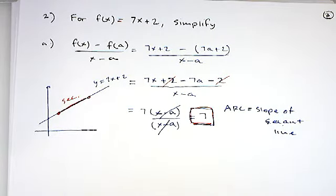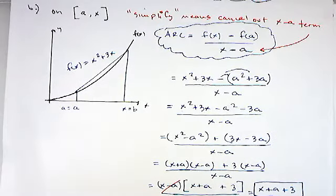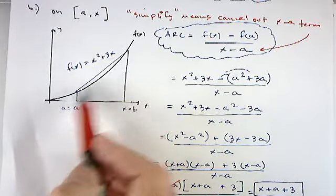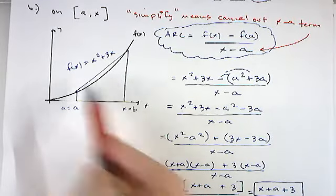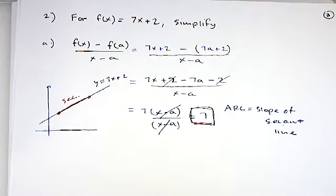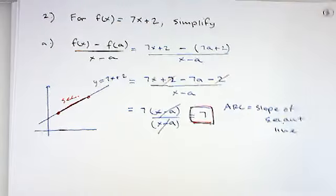When we simplified the difference quotient on our parabola, we got a function in x and h — that's because for a parabola the slope depends on which two points you take. But for a line, you always get the same slope no matter which two points you use. You should be able to show that the difference quotient formula also gives 7 for this linear function.